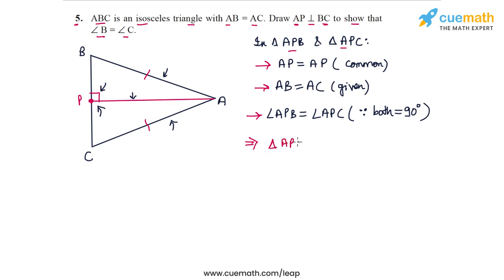Therefore, triangle APB is congruent to triangle APC using the RHS congruence criterion.